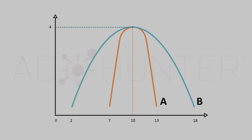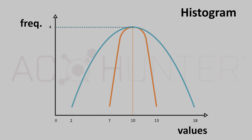Deviation tells us how spread out or close together values are in a set. By the way, this type of graph — where we plot values on the horizontal axis against the number of times those values appear on the vertical axis — is called a histogram. It's important to understand this concept as it's central to how we analyze beaconing behavior and is a central feature of AC Hunter. For more about histograms, please refer to the video linked in the description below.